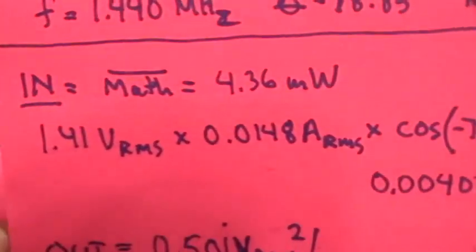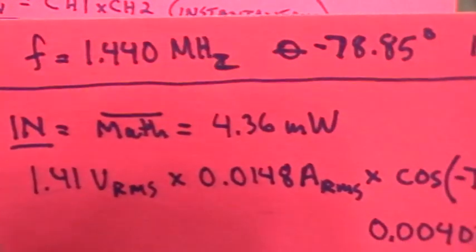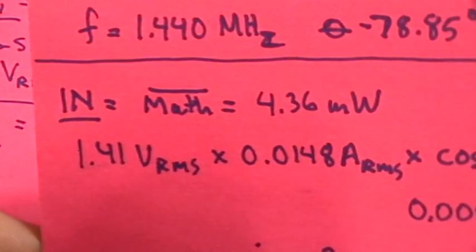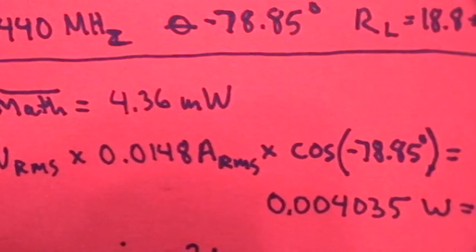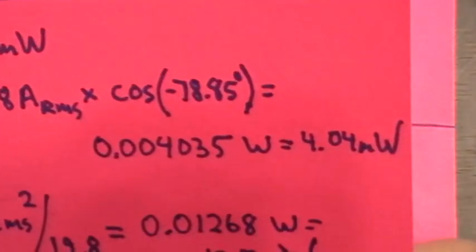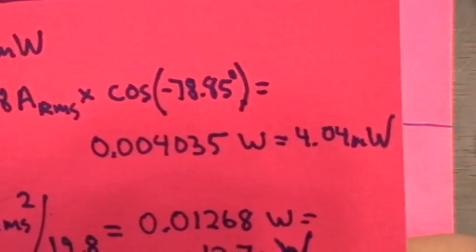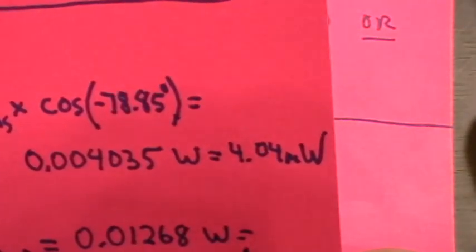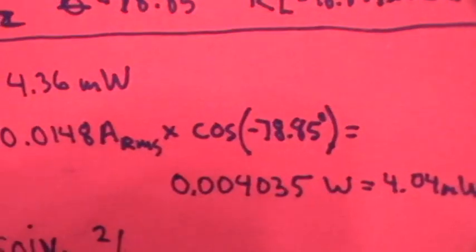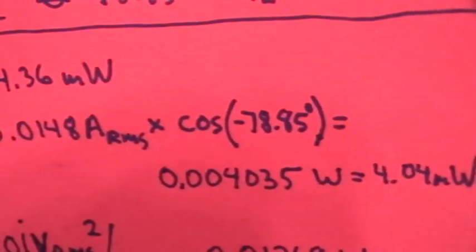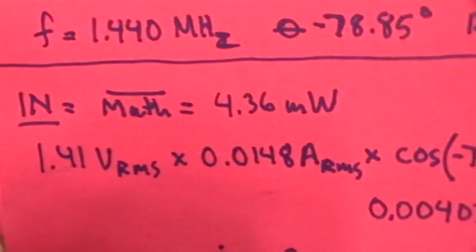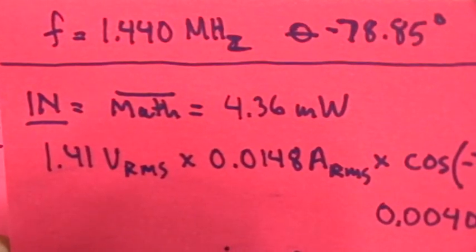Okay, so the input power then, the average of the math trace, which is the instantaneous multiplication of channel 1 by channel 2, gives 4.36 milliwatts. And now if we assume pure sine waves, we do 1.41 volts RMS times 0.0148 amps RMS times the cosine of minus 78.85 degrees, and that comes out to 0.004035 watts or 4.04 milliwatts. Okay, so the difference between the 4.36 milliwatts and the 4.04 milliwatts is telling us that the sine wave calculation, the assumption of having sine waves, is not completely true, there's a little bit of distortion there. So we can use the larger of these values, 4.36 milliwatts, as our correct input power.